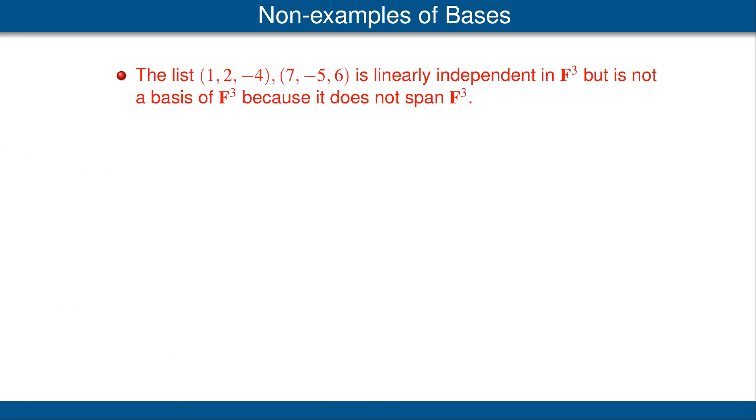Often when trying to understand a new definition, it's useful to see some non-examples as well as some examples. Thus, let's look at some non-examples of bases. Our first non-example is a list shown here of two vectors in F³. This list is linearly independent. Again, we can check easily that neither of these vectors is a scalar multiple of the other vector. But it does not span F³. Thus, this list is not a basis of F³.